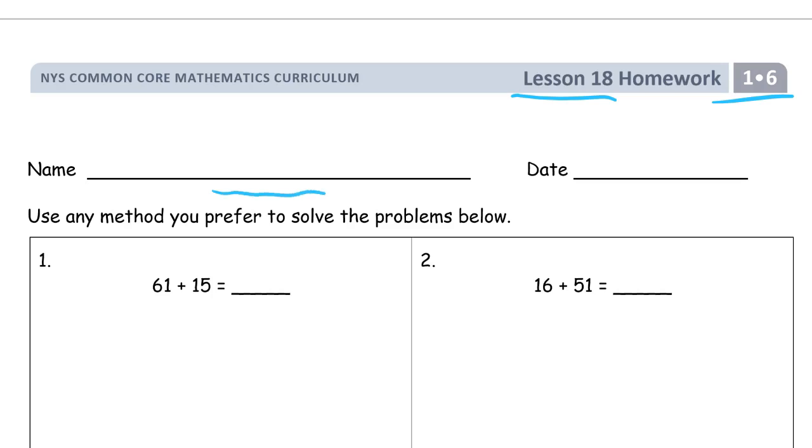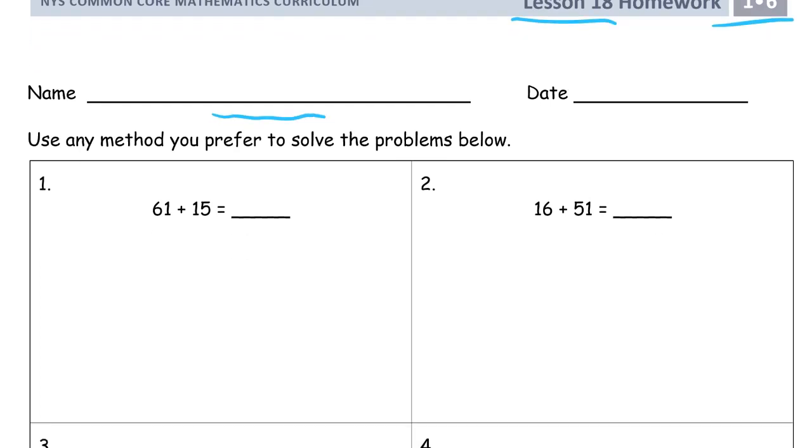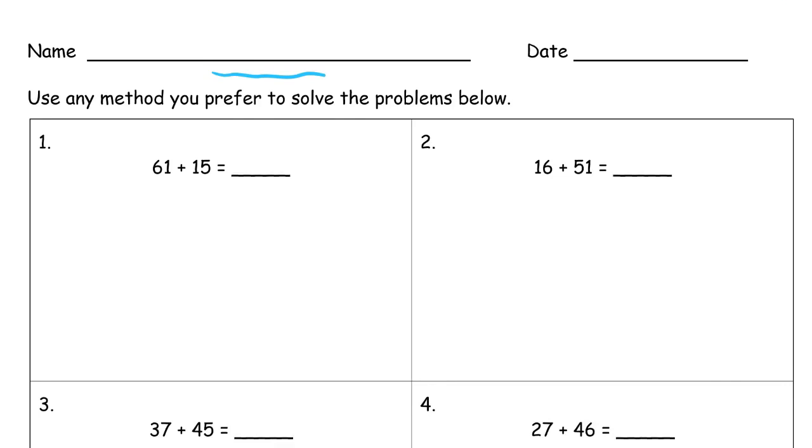Now it says we're using any method we want to solve the problems below. So we can draw the quick tens and the ones, we can do the vertical method we've been practicing for the last two lessons, we can use number bonds, and there's like four or five different ways to use number bonds, the arrow way. There's all those methods that we've been working on recently that we've learned and practiced. And we're thinking about looking at the numbers and what strategy is going to be the easiest one to use for the numbers that we have.